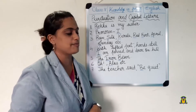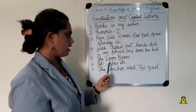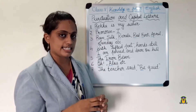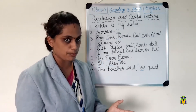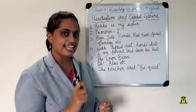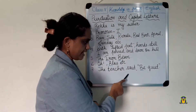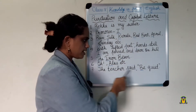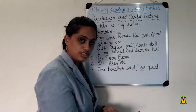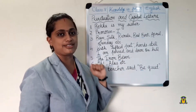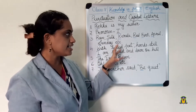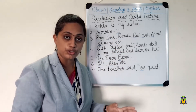See this: 'Oh,' 'alas,' 'wow' — all these are interjections. We will be studying about interjections in the coming lessons. Whenever we are writing these expressions, the first letter will always be in capital letters. That is the next instance. Now, the last one: 'The teacher said, be quiet.' When we write something with inverted commas, it should begin with a capital letter. These are the various instances where we have to use capital letters.